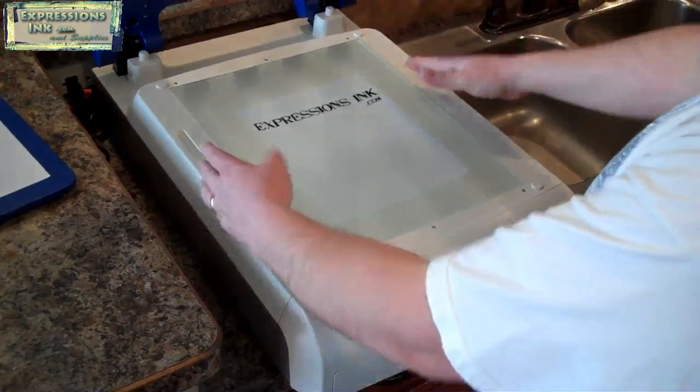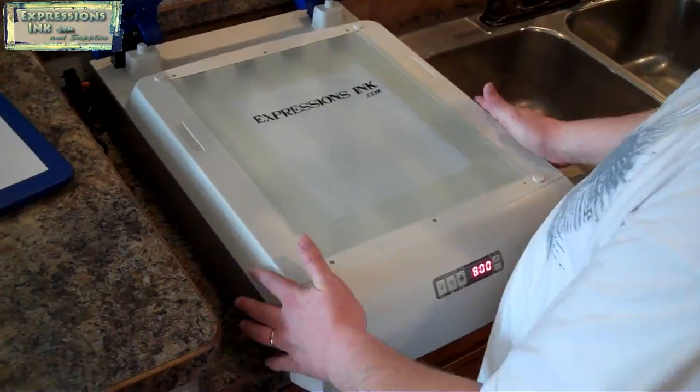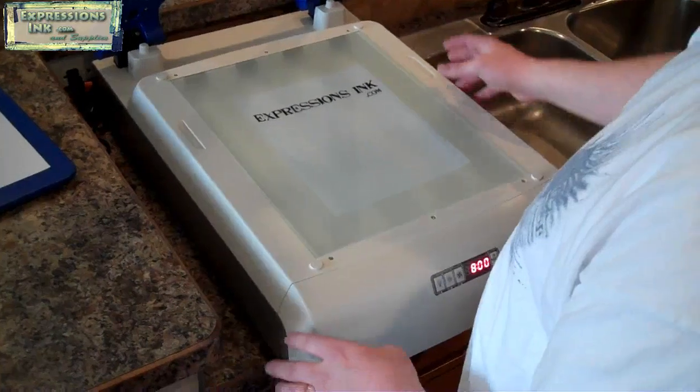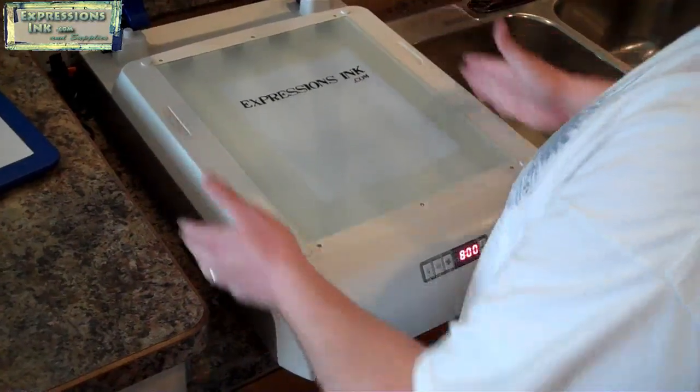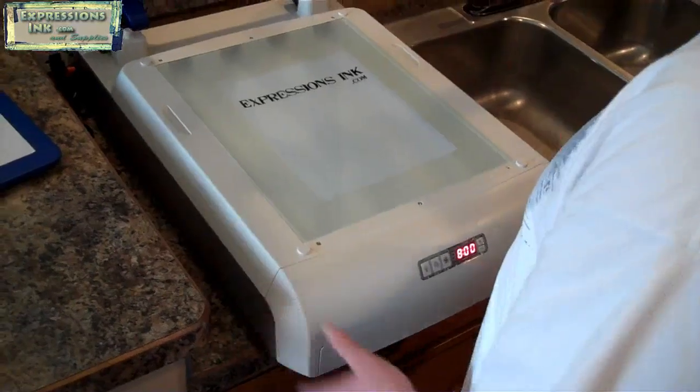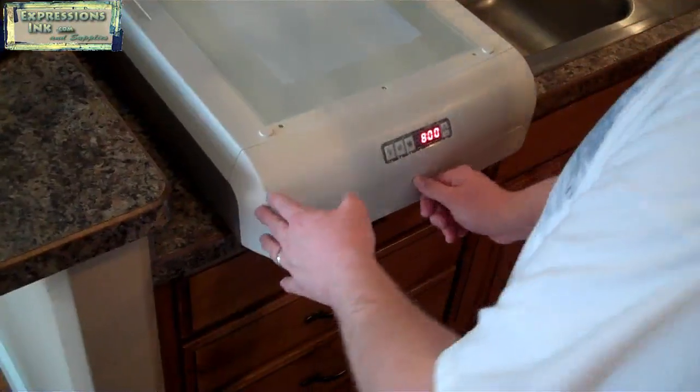We've positioned this on our light box inside the UV machine here. We're actually going to print on the back of a t-shirt, and that's roughly where we want it on the back of the shirt. So we've got that sitting on our light box.